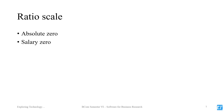This is the Ratio Scale. This is the highest level of measurement scale. Here we have an absolute zero — for example, salary zero means there is no salary. In SPSS, there are three measurement types: Ordinal, Nominal, and Scale. Scale refers to the interval and ratio scale combined.